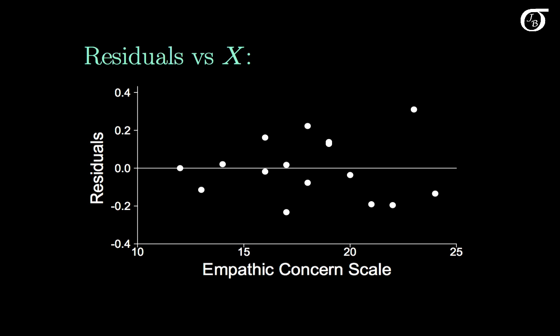Here I've plotted the residuals against the explanatory variable x. And I'm going to say there's no obvious problems here. There's no systematic curvature. There's no major outliers.